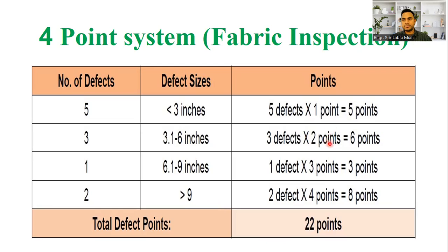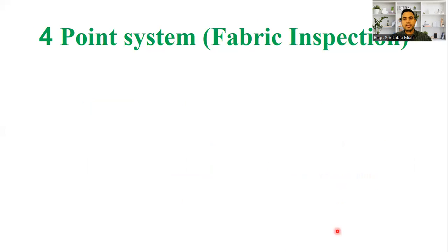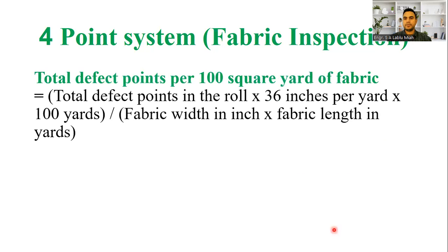Looking at all the defects, we can count how many defects are available. We have 22 defects and the total points are 22. The formula is: total defect points per 100 square yards of fabric. We check our defect points per 100 square yards.